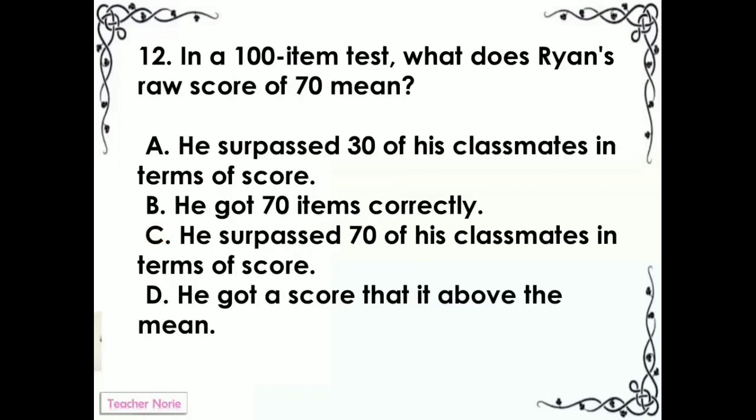In a 100-item test, what does Ryan's raw score of 70 mean? A. He surpassed 30 of his classmates in terms of score. B. He surpassed 70 of his classmates in terms of score. C. He got a score that is above the mean.